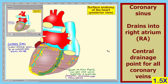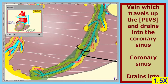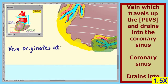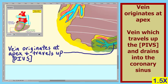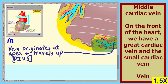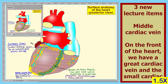The last structure that we will identify is the vein here that travels up the posterior intraventricular sulcus and drains into the coronary sinus. This vein originates at the apex and travels up the posterior intraventricular sulcus. On the front of the heart, we have the great cardiac vein and the small cardiac vein. On the rear of the heart, we have the middle cardiac vein, shown here. These are the only three new items we'll introduce in this lecture.